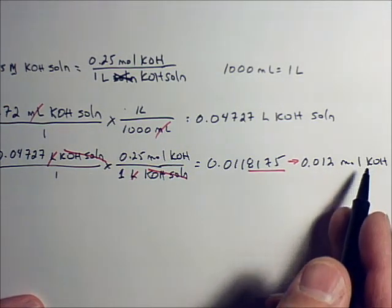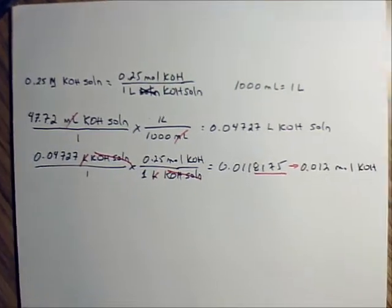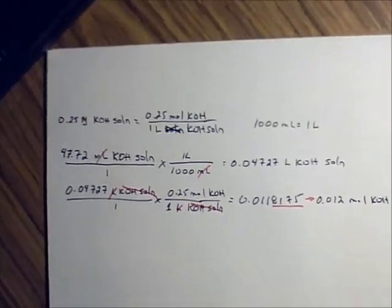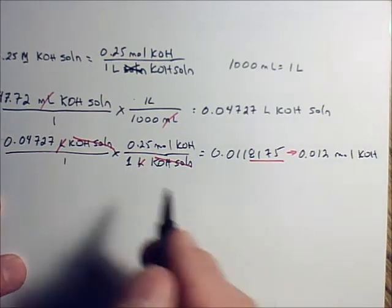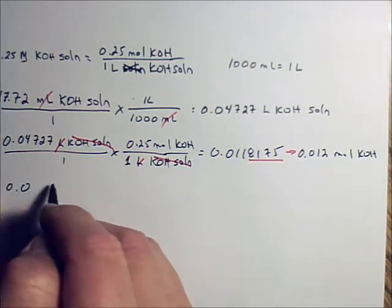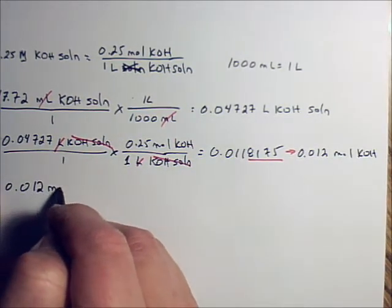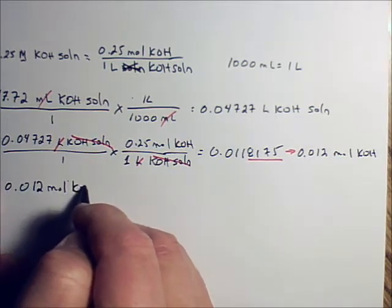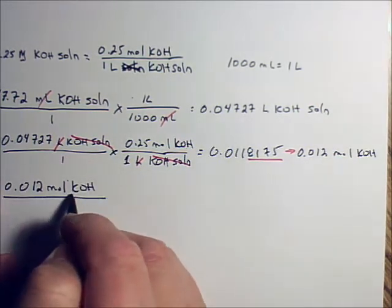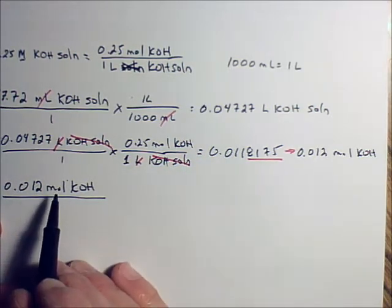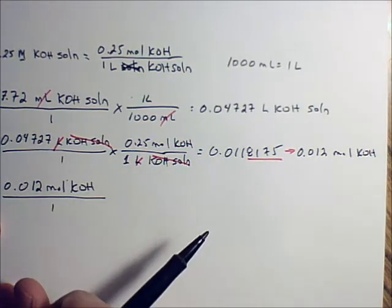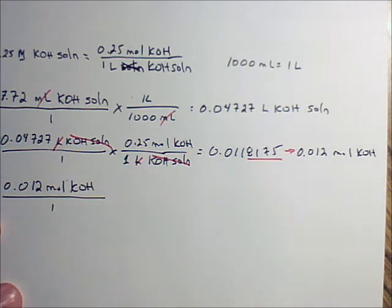So that can become a new starting amount now. 0.012 moles of KOH over 1. Now I have to go from moles of this to moles of the other species. So what do I need for that? A molar ratio.